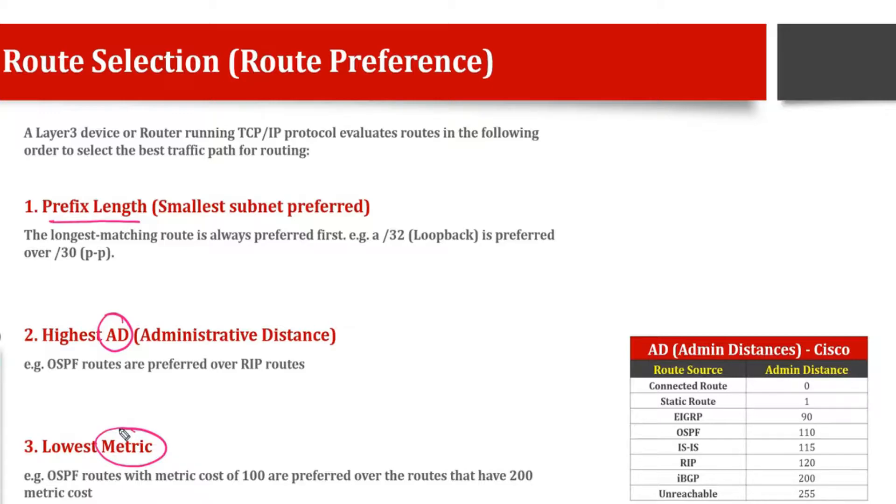So prefix length, first of all, this is a very common misconception. Whenever somebody asks you, or even me, which route will be selected, for example if we have routes one, two, and three and the router has to choose which path to take, if the admin distance of this one is one, this one two, and this one is three, we will say okay, it will go with the lowest admin distance. So we directly jump to the admin distance. But before admin distance, there is another thing which is more preferred in the routing mechanism, which is called prefix length. So you must always see for the prefix length smallest subnet. You shouldn't just jump onto the admin distance.